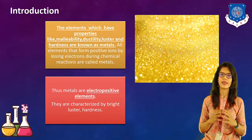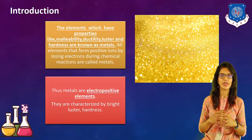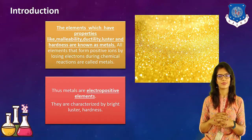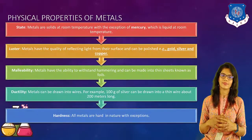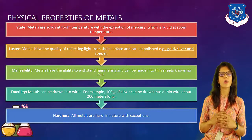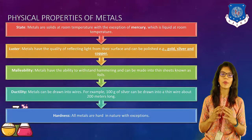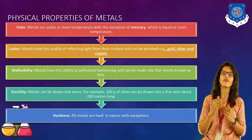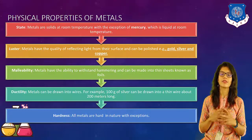Thus, metals are basically the electropositive elements. They are characterized by their bright luster and their hardness. Generally, they are hard in their nature. Now let's go to the next topic, which is physical properties of metals. We will take a look at the properties one by one. As we move ahead, we will see the examples of it also. So the first property is state.